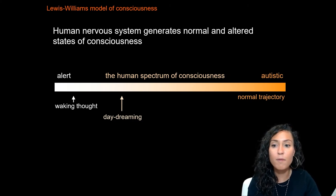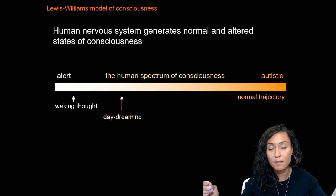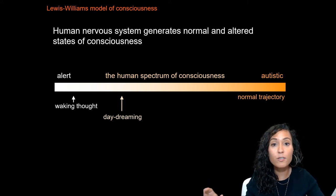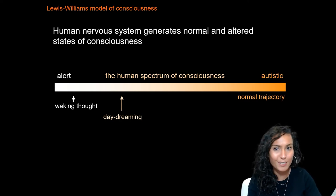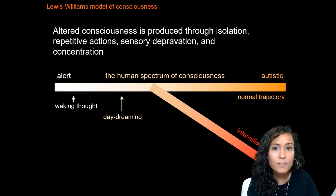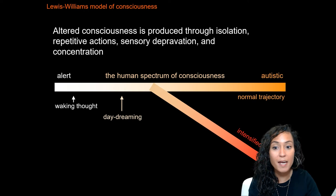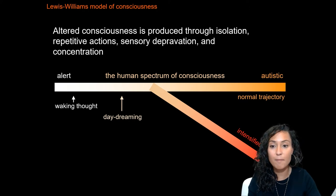Lewis-Williams' model places human consciousness on a spectrum, from alert to autistic — think basically asleep. Along this spectrum, the human nervous system generates normal consciousness, as well as altered states of consciousness. Altered states of consciousness are produced through isolation, rhythmic repetitive movements and chanting, intense concentration, and oxygen deprivation, which produces hallucinations.